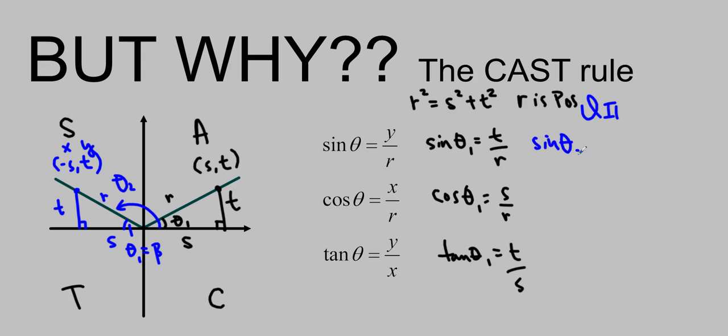Sine of theta 2 is equal to t over r, positive t over r. Cos of theta 2 is equal to negative s over r, and tan of theta 2 is equal to t over negative s, negative t over s. So you can see that because this s is negative in this quadrant, it actually affects only cos and tan, but not sine because it's not involved in t over r. So that is why sine is positive, but cos and tan are negative.